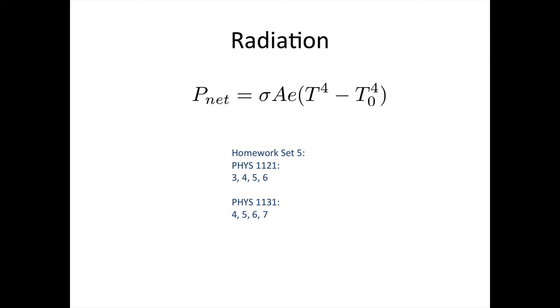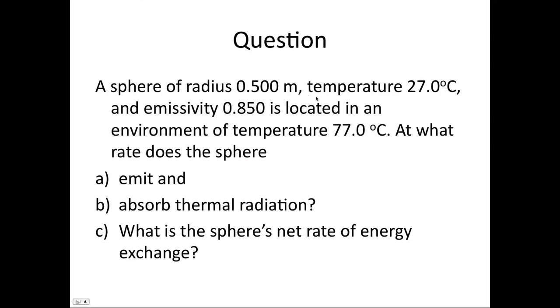Let's do a few examples now. A sphere of radius 0.5 meters, temperature 27 degrees C, and emissivity 0.850 is located in an environment of temperature 77 degrees C.